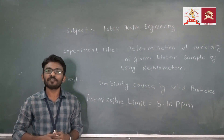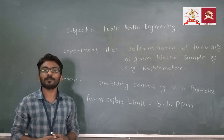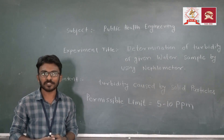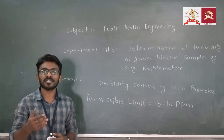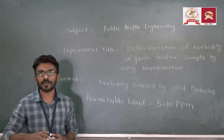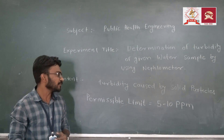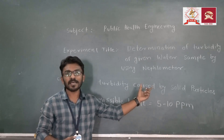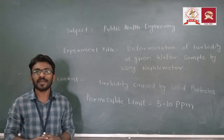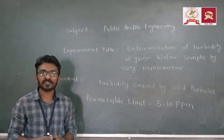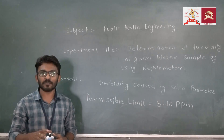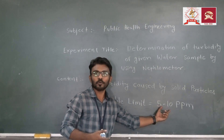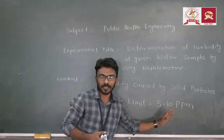Turbidity: the definition of turbidity is it is the property of water in which water loses its transparency because of solid particles. That means turbidity is caused by solid particles. By Indian standards, turbidity in drinking water should be within 5 to 10 PPM.